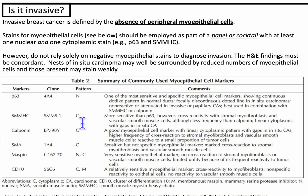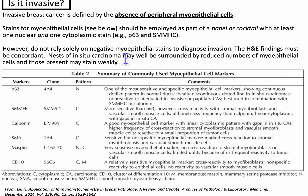What is meant by invasive? Invasive breast cancer is defined by the absence of peripheral myoepithelial cells. In addition to H&E, we can use IHC stainings, and we want to employ a panel or cocktail with at least one nuclear and one cytoplasmic stain — at our institution we use P63 and calponin. We use a cocktail to increase sensitivity and specificity, as some myoepithelial markers will cross-react with other normal or non-malignant cells. It's important not to rely 100% on IHC myoepithelial markers alone, because nests of in situ carcinoma can be surrounded by reduced numbers of myoepithelial cells, and those present may stain weakly — so it might look like invasive cancer but in fact is not.